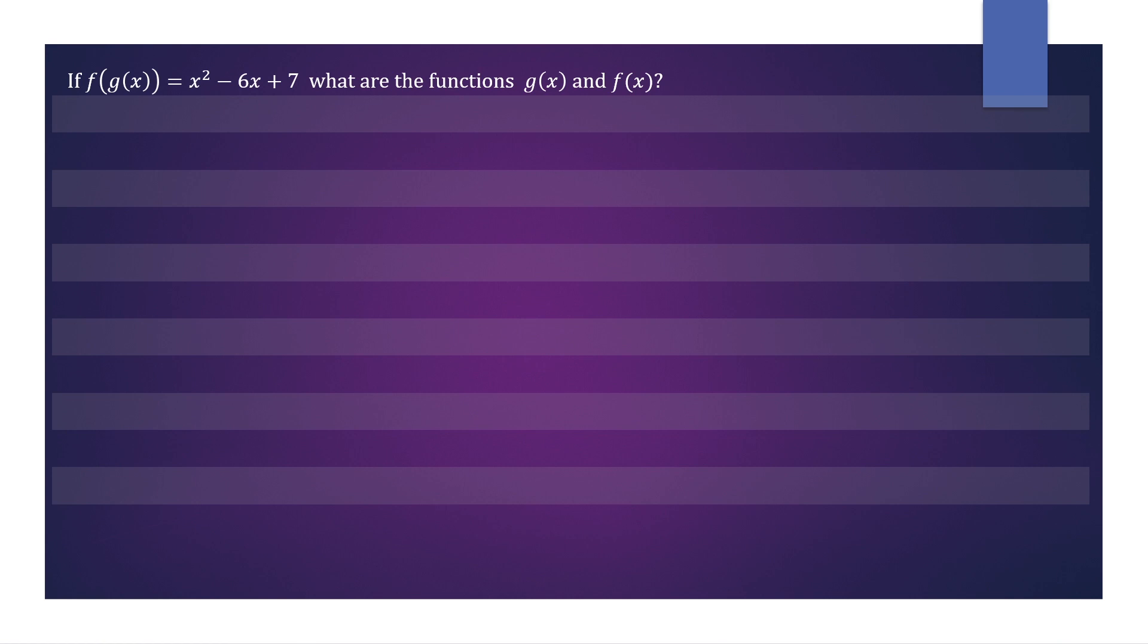When you look at the function, it's not immediately clear what g(x) and f(x) are. So we're going to have to modify this composite function. As we have a quadratic function, we can complete the square to see what we get.